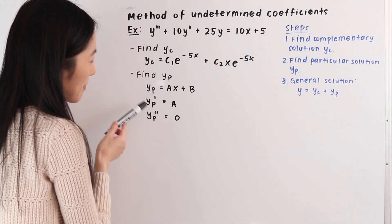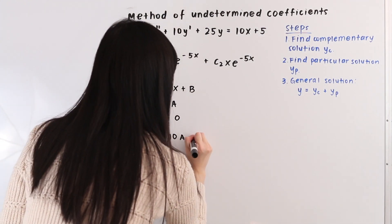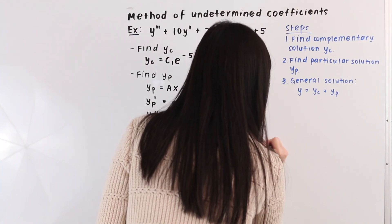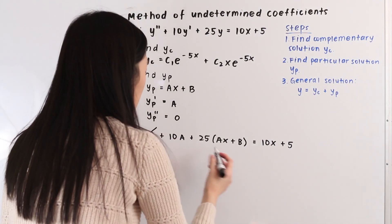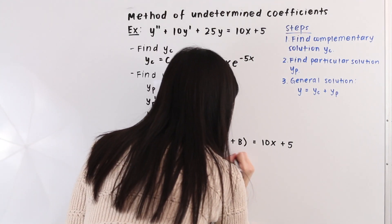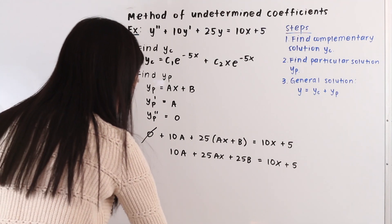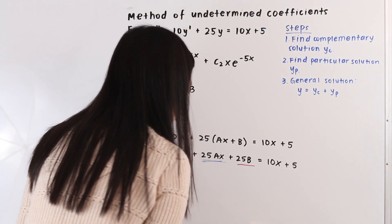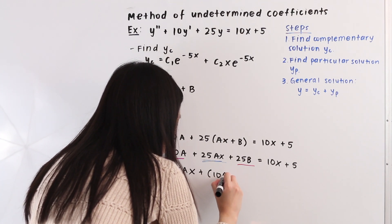Now we plug in yp, yp prime, and yp double prime into our differential equation, giving us 0 plus 10a plus 25 times (ax plus b) is equal to 10x plus 5. Simplifying, we distribute to get 10a plus 25ax plus 25b equals 10x plus 5. Grouping like terms, we have 25ax plus (10a plus 25b) equals 10x plus 5.